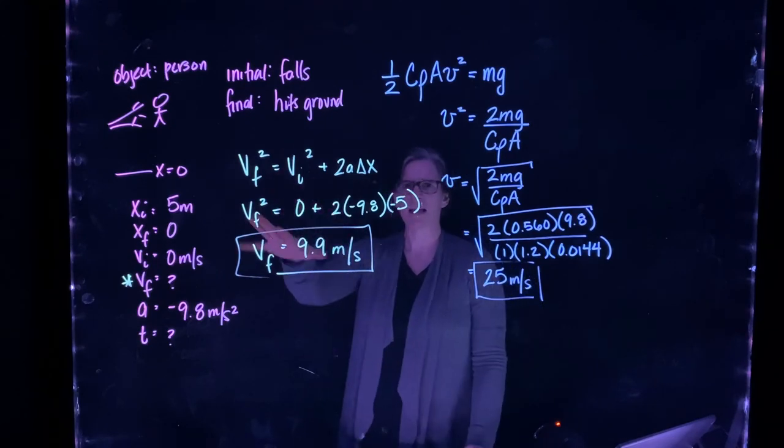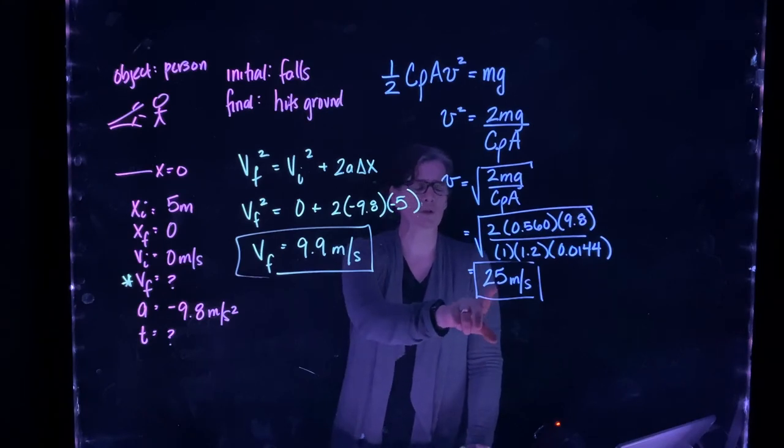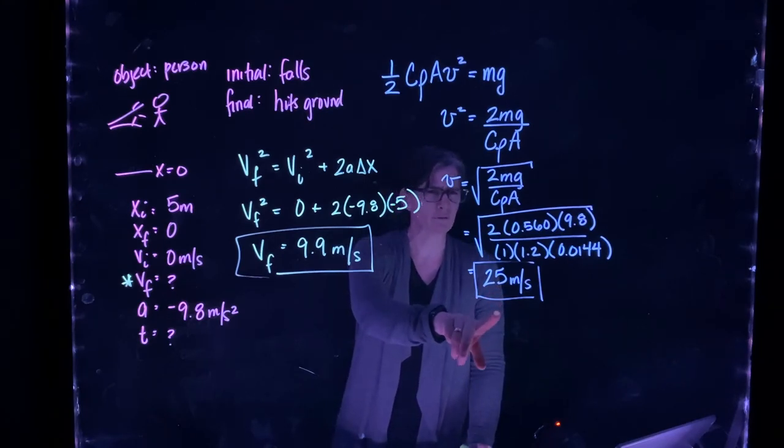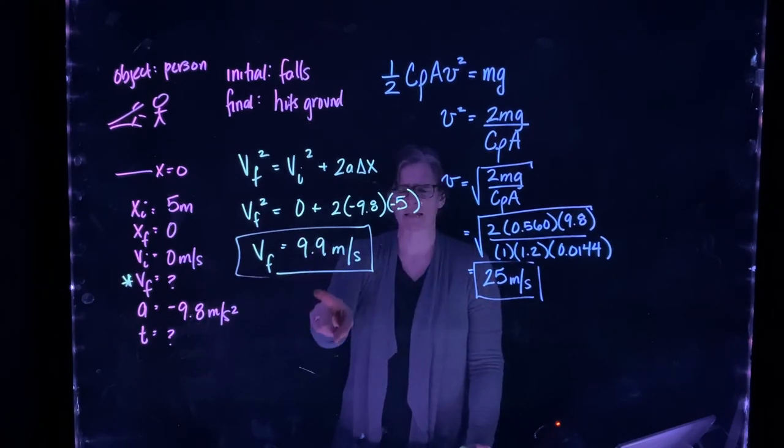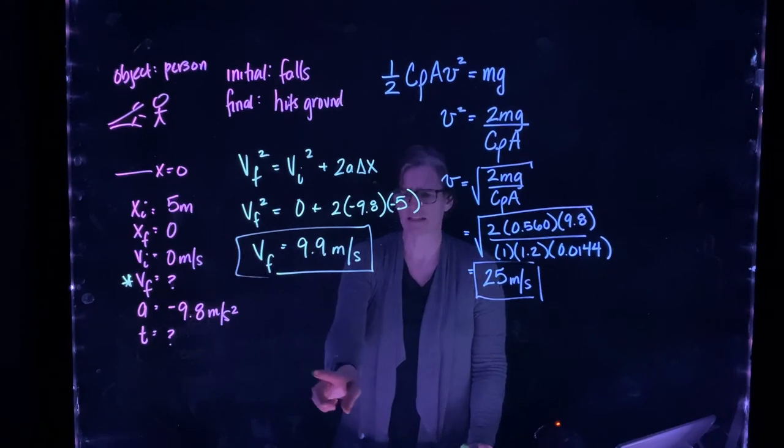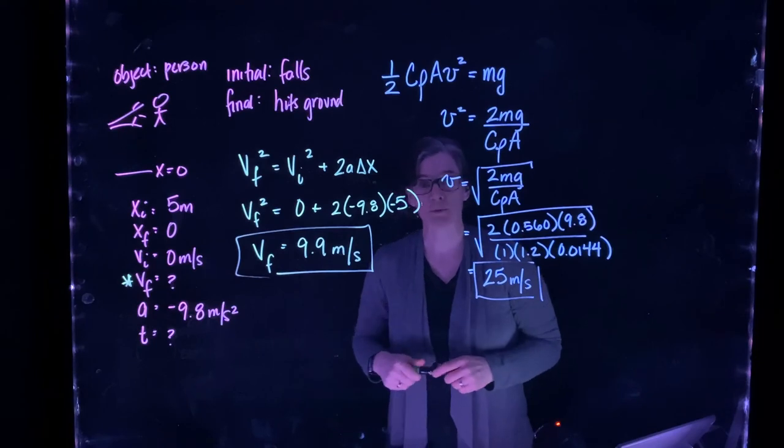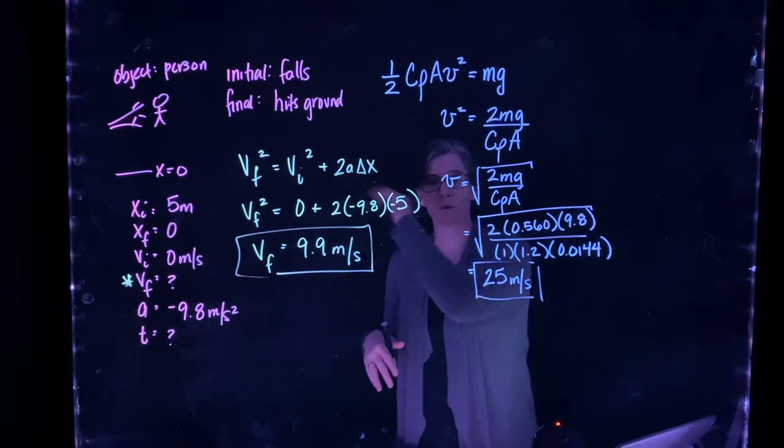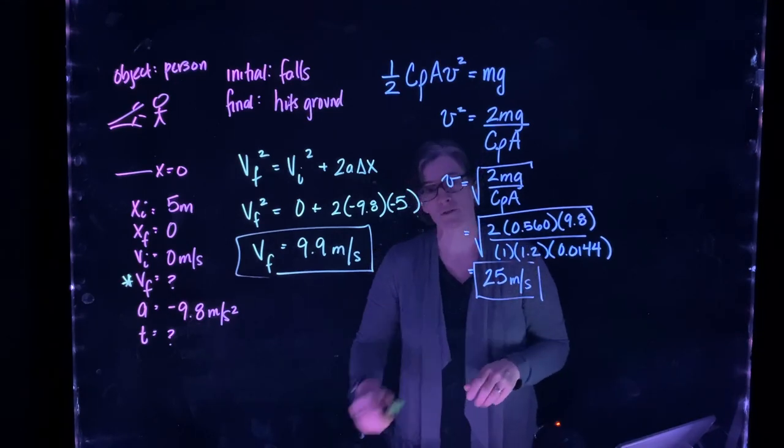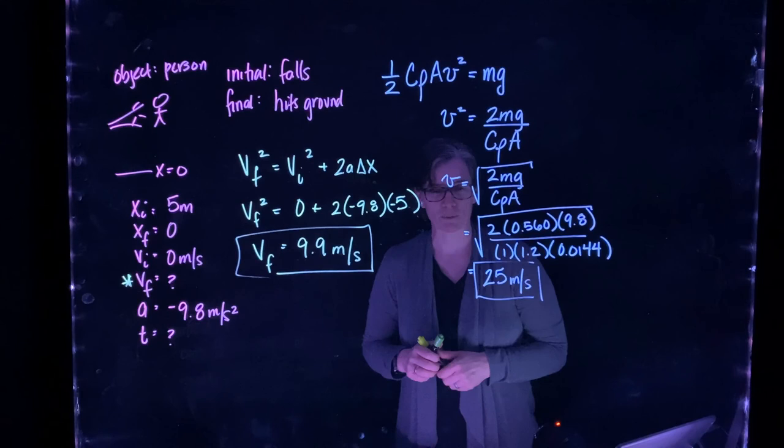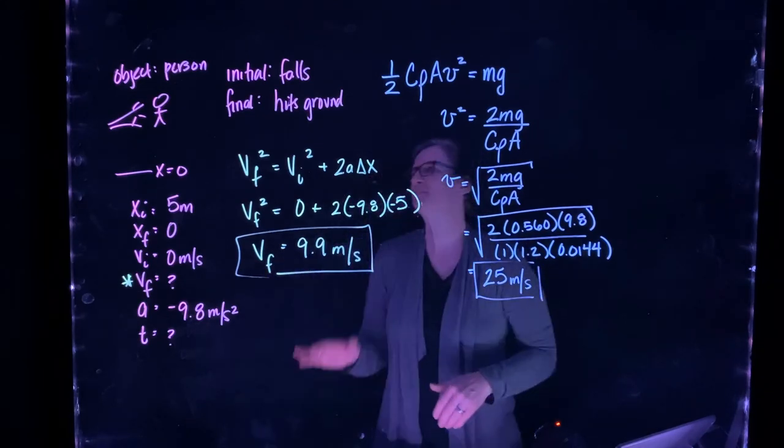Now we're supposed to compare this to the squirrel. It takes the squirrel to get to 25 meters per second to reach terminal velocity. But if I ignore that, I'm only at a situation of v final being 9.9 meters per second. So in the absence of air, that squirrel would have been going 9.9 meters per second when it hits the ground. We want to compare that to its terminal velocity, which is 25 meters per second. That's what the second half of the problem says, compare those two values.